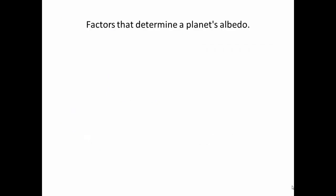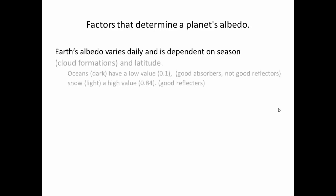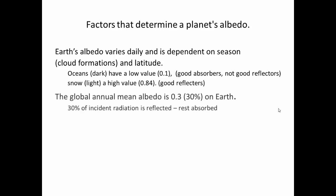In terms of our planet, what factors determine the Earth's overall albedo? The Earth's albedo varies depending on cloud formations and latitudes. The oceans are dark and have a low albedo value, meaning they are good absorbers but not good reflectors. Snow, on the other hand, is light colored with a high albedo value of 0.84, meaning it is a good reflector and doesn't absorb much radiation. The global annual mean albedo is about 0.3, or 30%, so 70% of radiation falling on the Earth is absorbed.